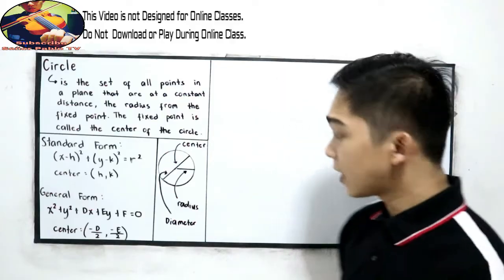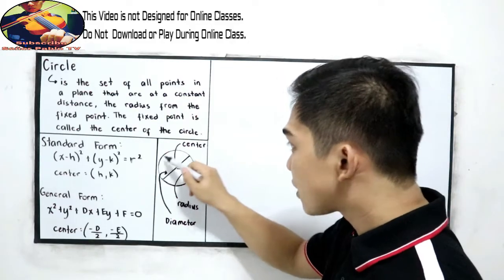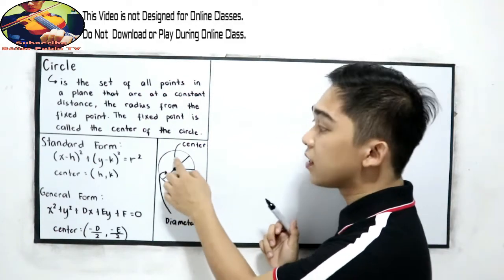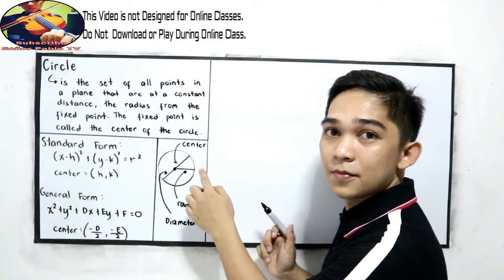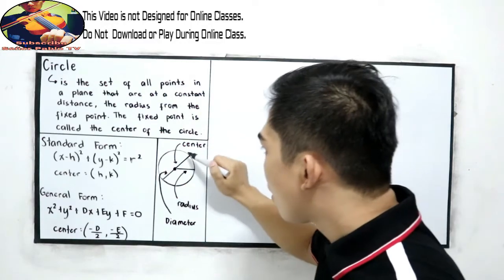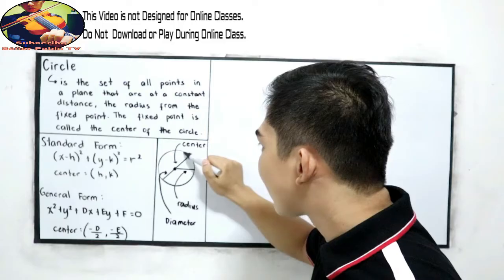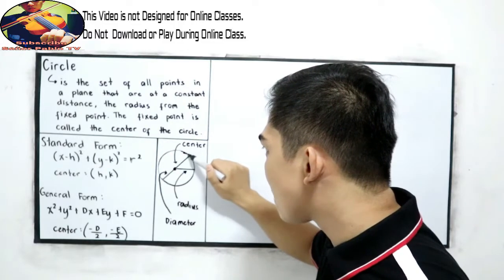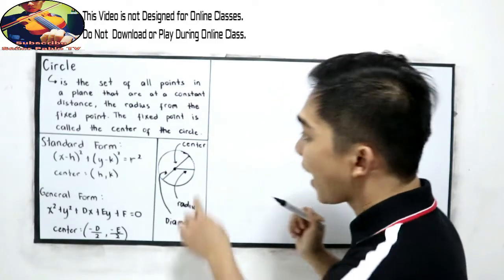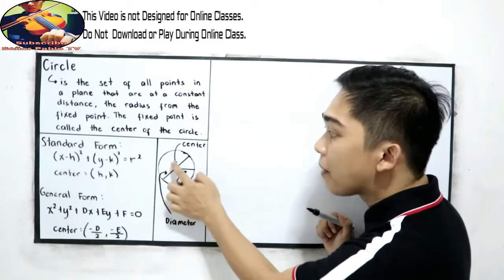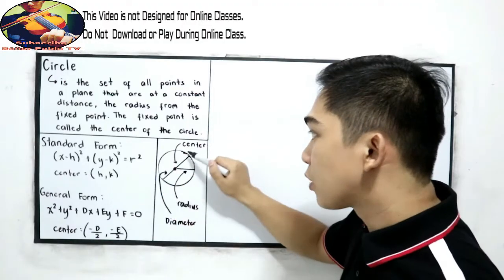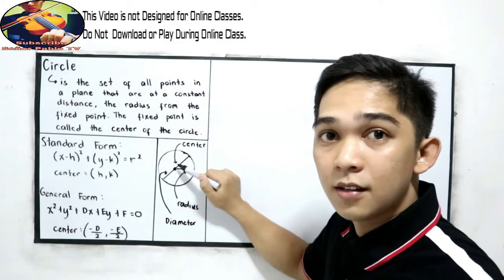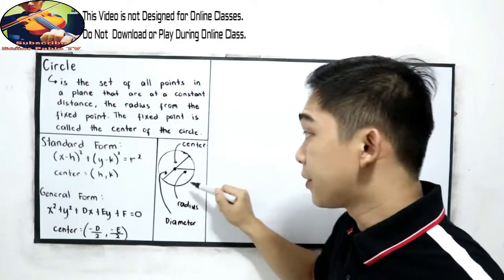Let us illustrate to better understand. We have a circle and we have a fixed point, that is the center. From the center, we have a set of points — infinitely many points — and these points are equidistant from our center. If we connect one point on the circle to our center, that is our radius.